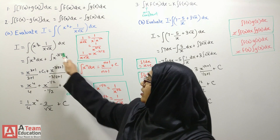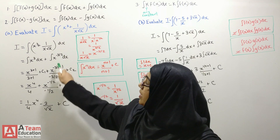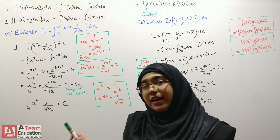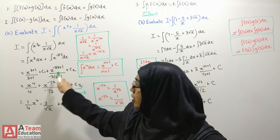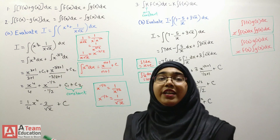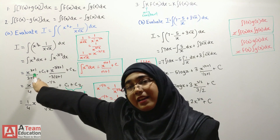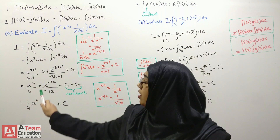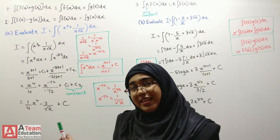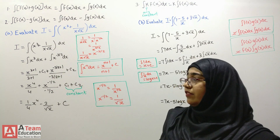Similarly, the integral of x raised to minus 3/2 is x raised to minus 3/2 plus 1, over minus 3/2 plus 1, plus the constant of integration. Now, 3 plus 1 is 4, so x cubed integrates to x raised to 4 over 4. And minus 3/2 plus 1 equals minus 1/2, giving x raised to minus 1/2 over minus 1/2.